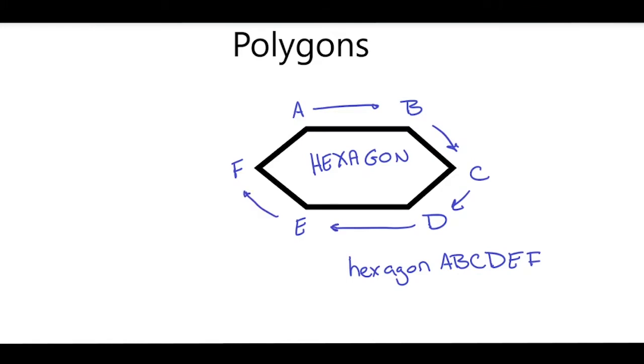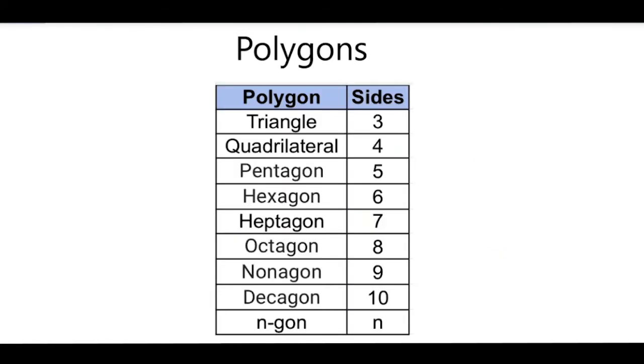So there are a number of different polygons. There's the triangle, and a triangle has three sides. There's the quadrilateral, which has four sides. A pentagon has five sides. A hexagon, which is one we just did, has six sides. The heptagon has seven sides. An octagon has eight sides. That's like a stop sign. A nonagon has nine sides. A decagon has ten sides. And an n-gon has n sides.